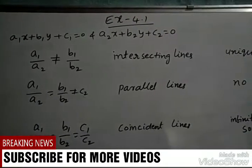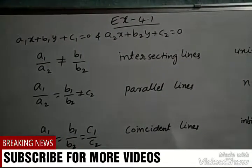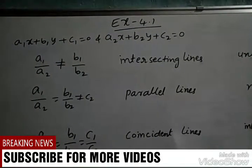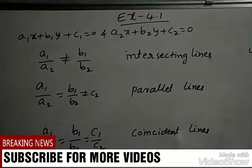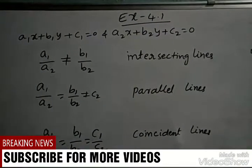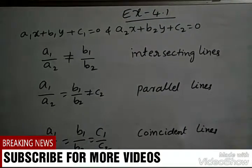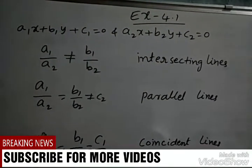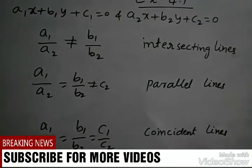Welcome to Rakesh Tutorials. Today our topic is the fourth chapter: Pair of Linear Equations in Two Variables. Before going to Exercise 4.1, there is one important formula. If two linear equations are a1x + b1y + c1 = 0 and a2x + b2y + c2 = 0, then there are three conditions regarding what type of lines and what type of solutions exist.